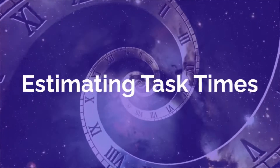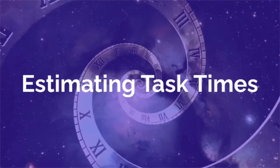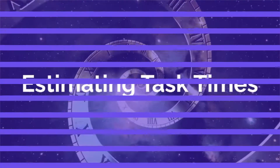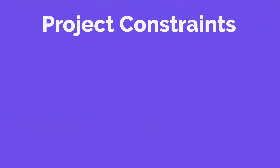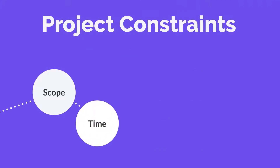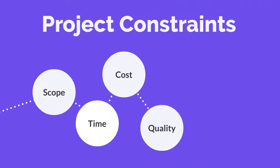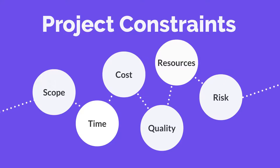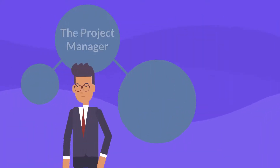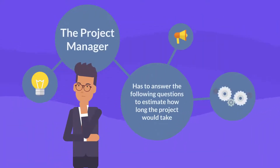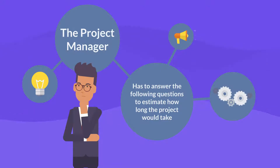A project manager generally faces six project constraints: scope, time, cost, quality, resources, and risk. The project manager has to answer the following questions relating to each constraint to accurately estimate how long the project will take.